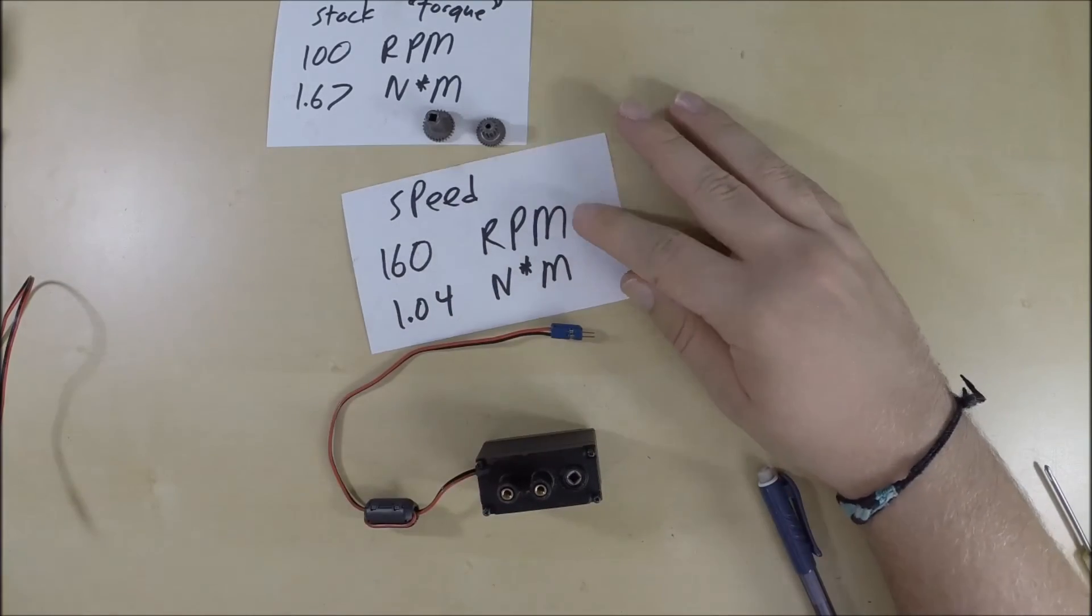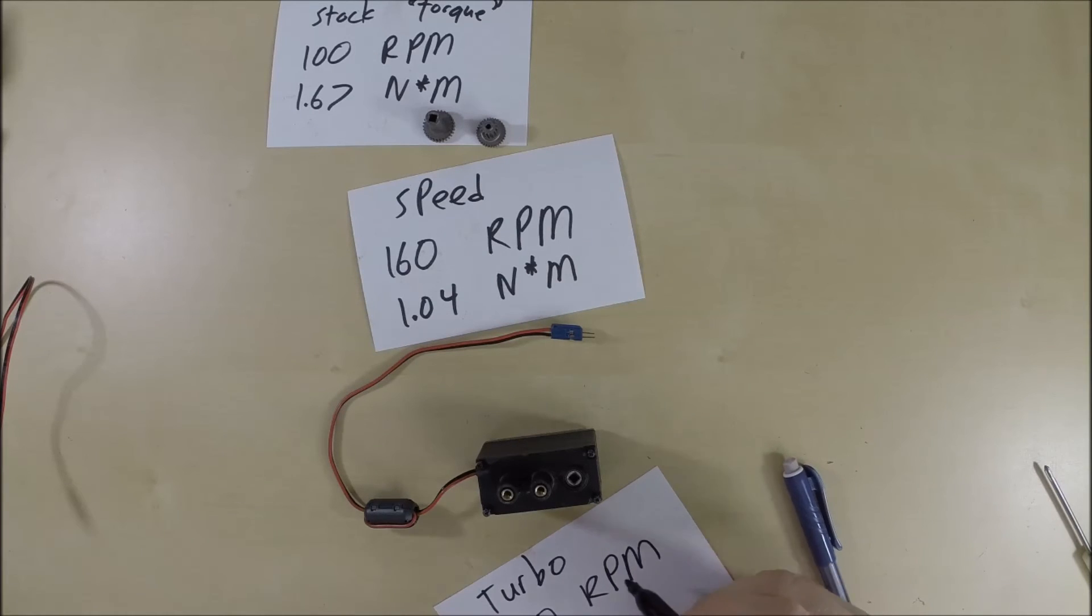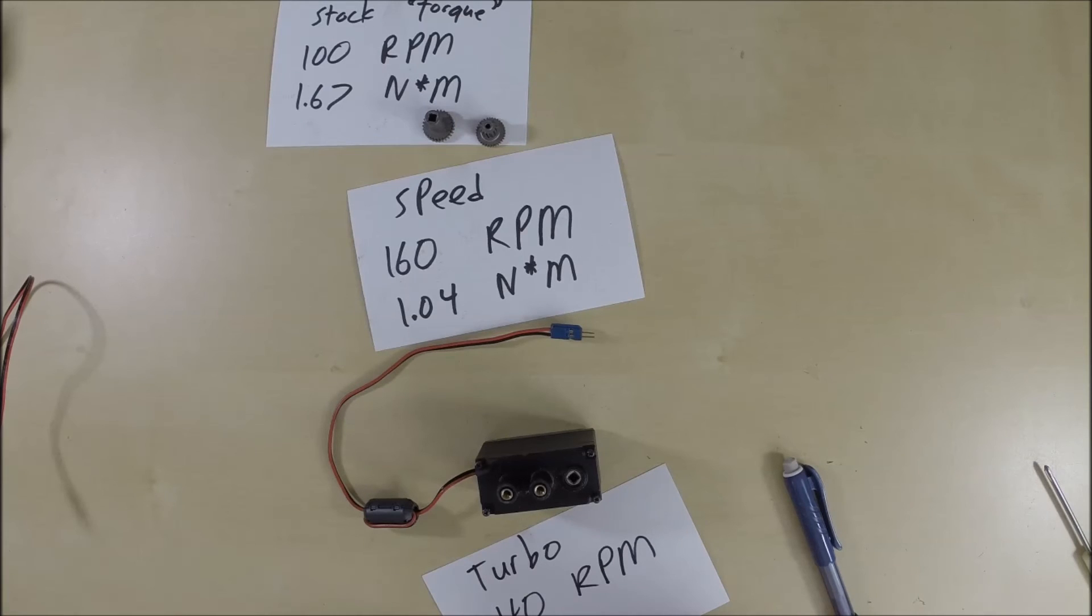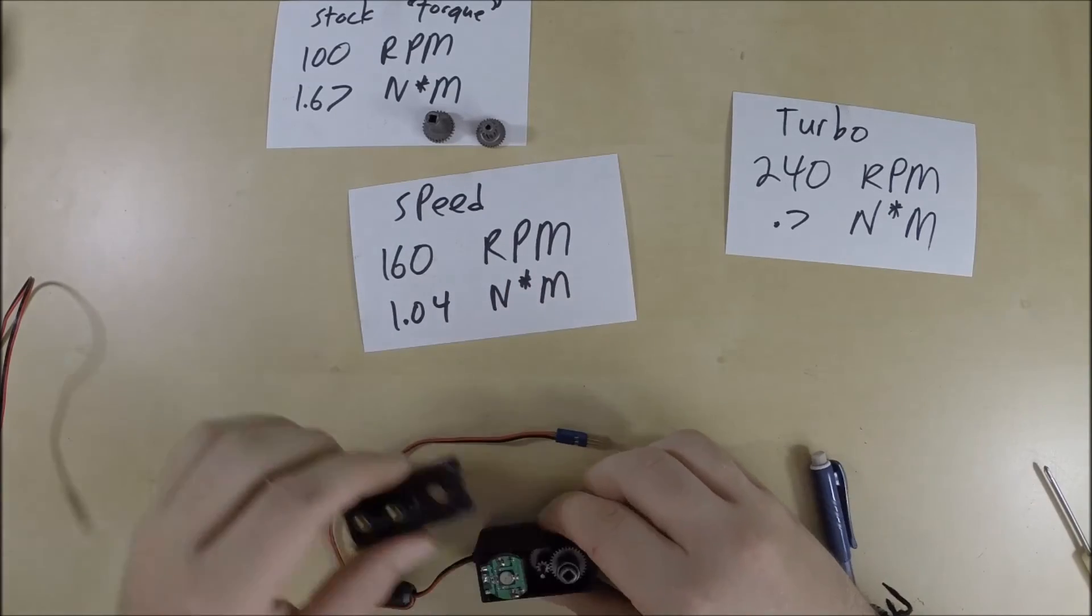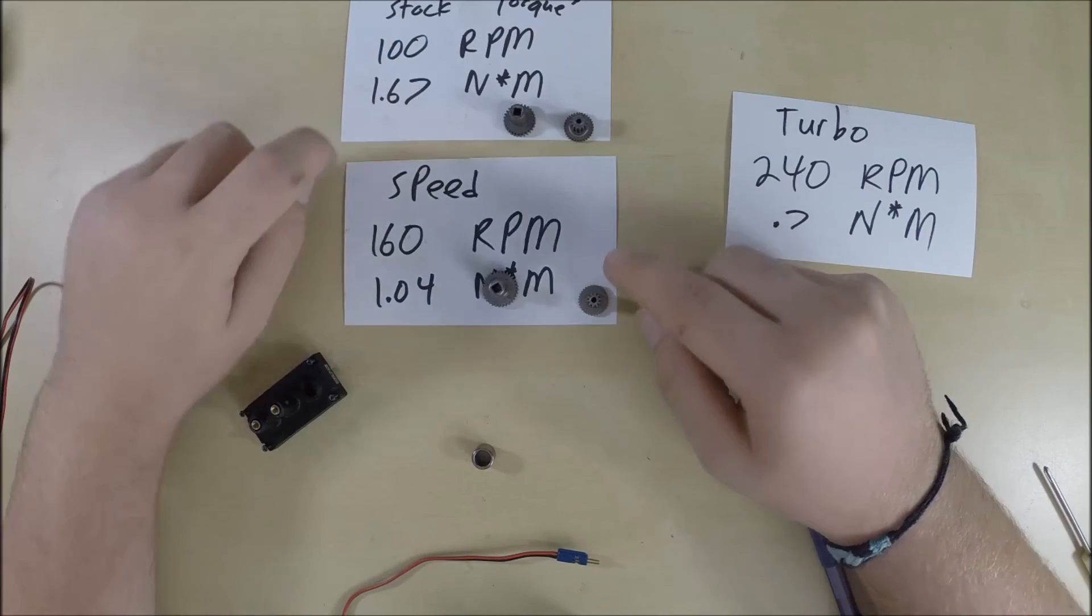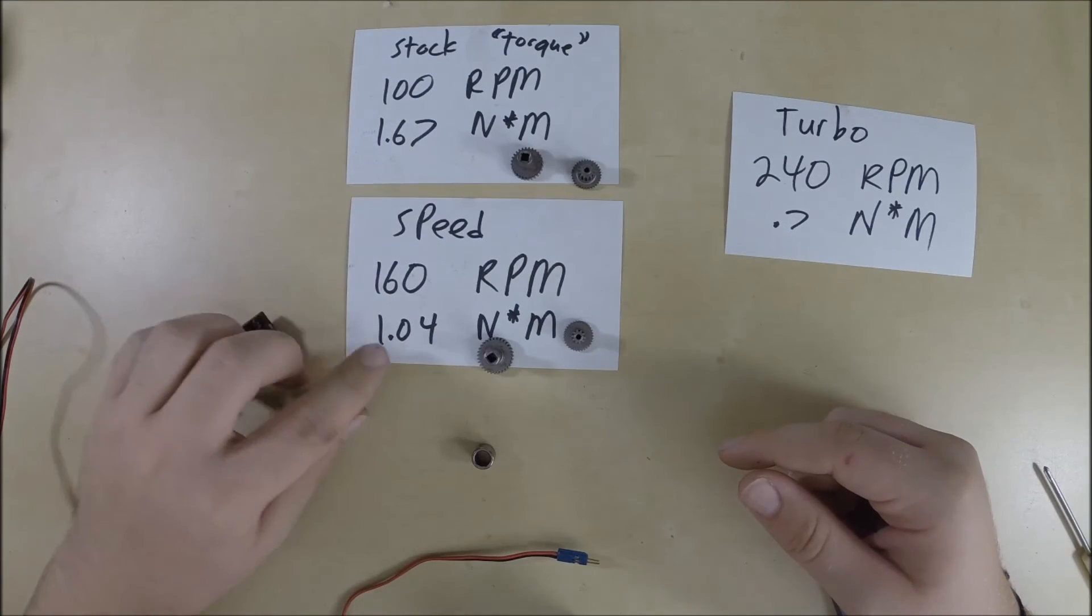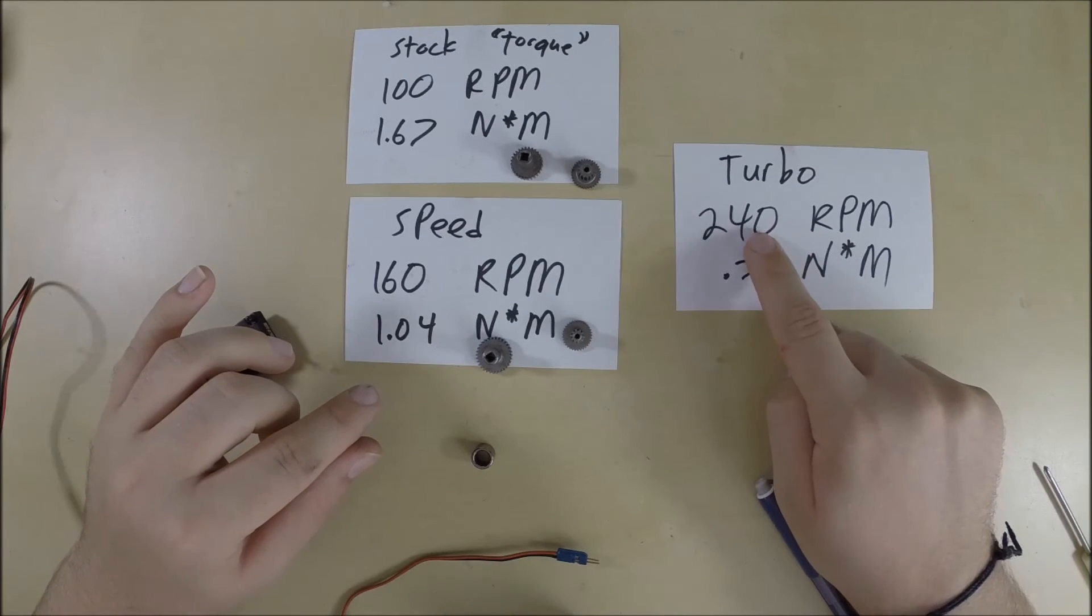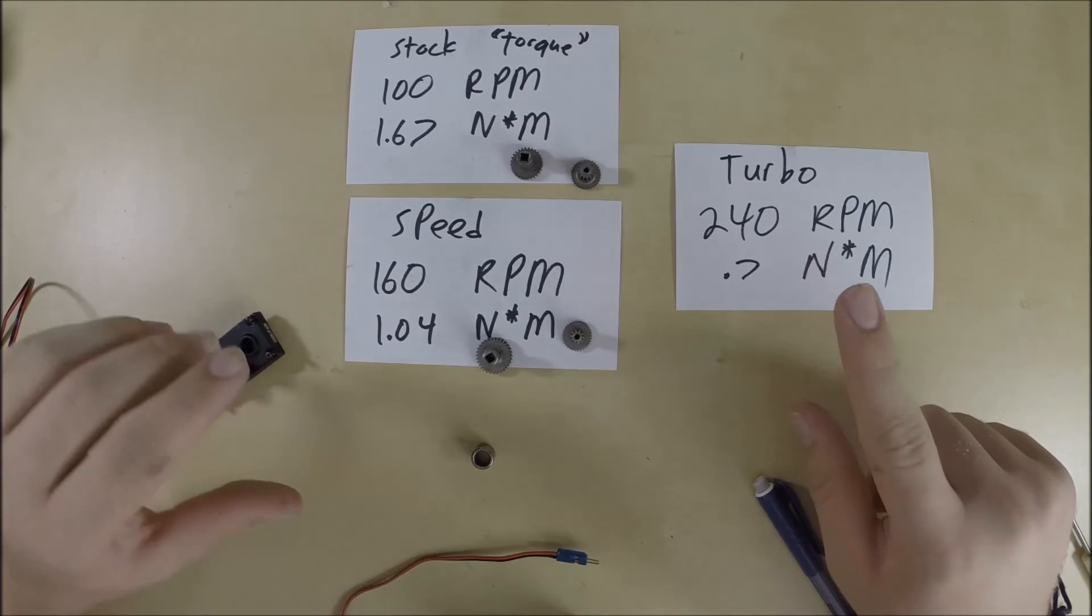And something new, sorry I didn't talk about this earlier. But something new is now they have a turbo speed which spins at 240 RPMs. But it only has a Newton-meter of torque of 0.7. So these are the three current ratios they have for these 393s they can change out. So you have the stock torque, it spins at 100 RPMs and has a lot of torque. Or you have the speed which will spin at 160 RPMs and a little bit less torque but still a substantial amount. And then you have the turbo now which spins really really fast at 240 RPMs. But it has very very minimal torque, very very weak torque.